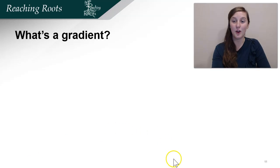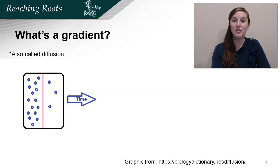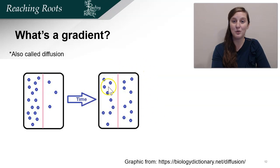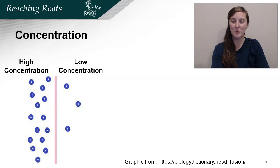Let's cover this using a graphic. Here are some molecules in very high concentration on this side, and there's a membrane which the molecules can pass through, and on this side there's a low concentration. Over time, the molecules go down their concentration gradient to become diffused, so the amount of molecules on both sides becomes equal — from a high concentration to a low concentration. Molecules always move from a high concentration to a low. This is because they want to be spread out.